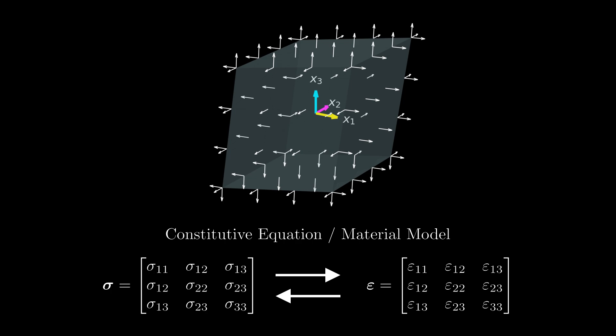Finding a good model for the relation between stresses and strains is not at all easy. It highly depends on the material under consideration and on the external influences the material is subjected to. In this video we will talk about the simplest material model — the linear elastic material model.